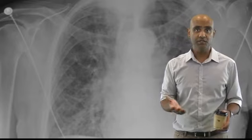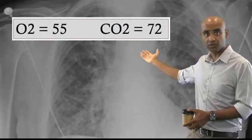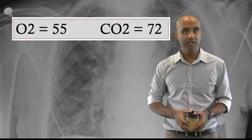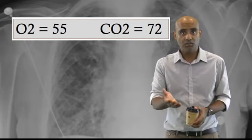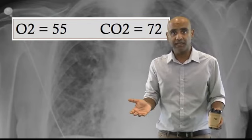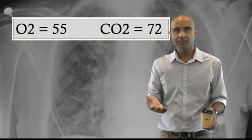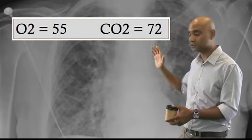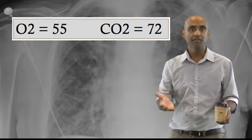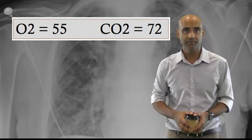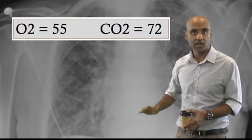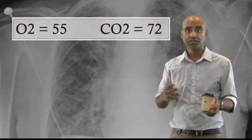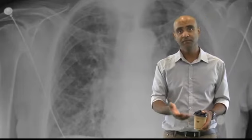Which surprisingly shows a PaO2 of 55 and a PaCO2 of 72. Now potentially you can also use venous blood gases, but there are many other variables to consider, so to keep this discussion simple, I'm just going to talk about arterial blood gases. So we now have a hypoxic as well as a hypercapnic problem, so changing them over to BiPAP seems appropriate.